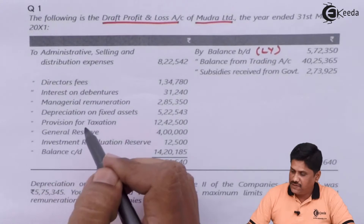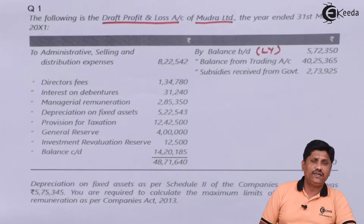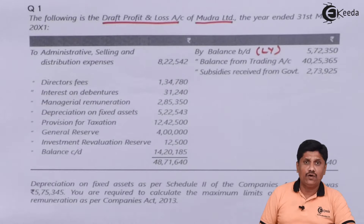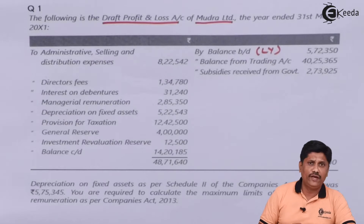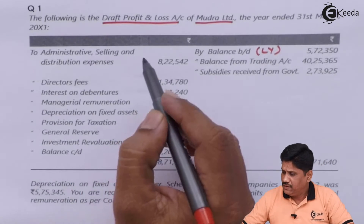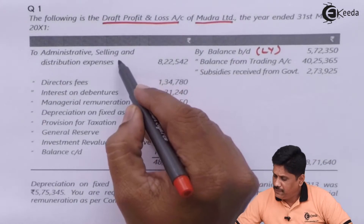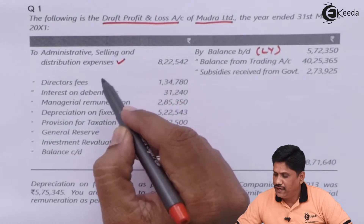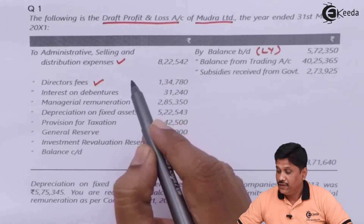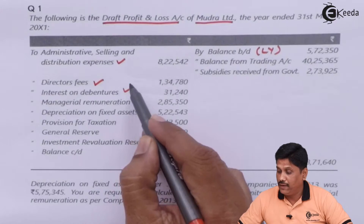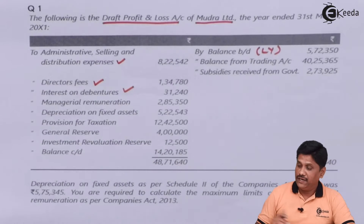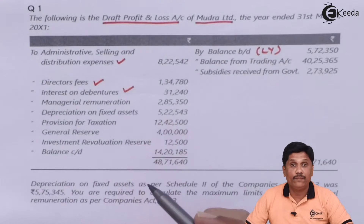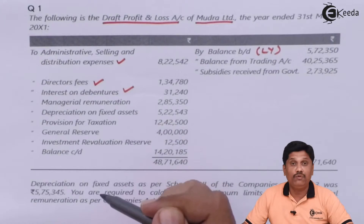On the debit side, various expenses are given. We have to consider only those expenses which are allowed as per Section 198. Administrative expenses are allowed. Director fees are allowed. Interest on debentures is allowed. Managerial remuneration, however, is not allowed under Section 198.